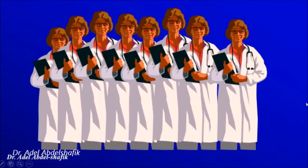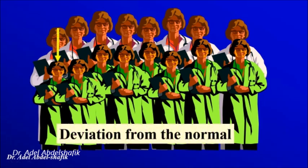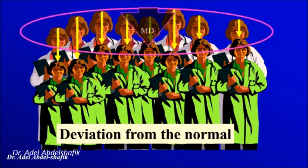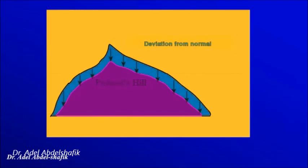Suppose we have a group of persons and then another group, and we want to know how much the second group deviates from the original group. To know this, we check the difference between each person, then calculate the mean of those differences — this is known as the mean deviation. The same happens in visual field testing: the normal field is the reference, each point of our patient is tested and compared with the normal value, the differences are recorded, and then the mean of these differences is calculated.